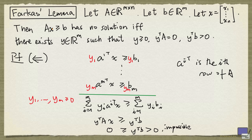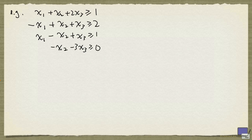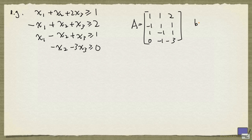Now, to make things look more like the statement of the Farkas Lemma, let's identify the matrix A and the tuple B. So here, the matrix A will be the following. And B is 1, 2, 1, 0.